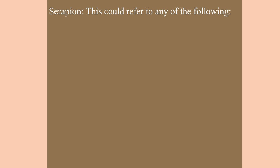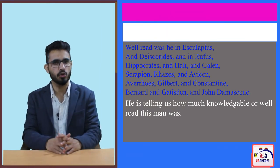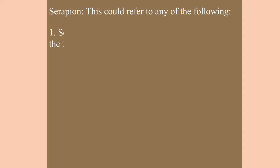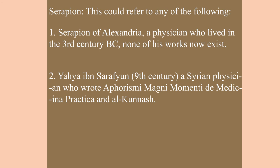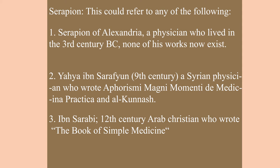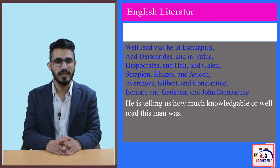Serapion could refer to one of three people: Serapion of Alexandria, a physician of the 3rd century BC whose works no longer exist; Yahya ibn Sarafiyun, a 9th century Syrian physician who wrote Aphorisms and Al-Kunnash; or Ibn Sarabi, a 12th century Arab Christian who wrote the Book of Simple Medicine. Serapion could refer to any of these three writers on medicine.